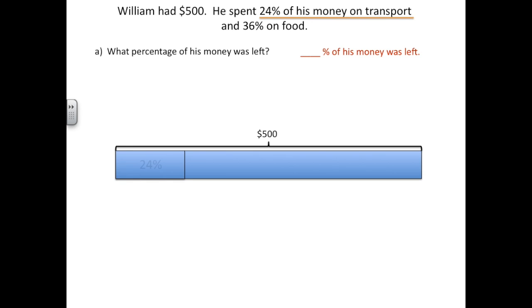So we can label 24% of our bar with 24%. We then are also told that 36% was spent on food. So we're going to estimate 36% of our whole bar and label that 36%. We want to find what percentage of his money was left, so the remainder is going to be our question mark.